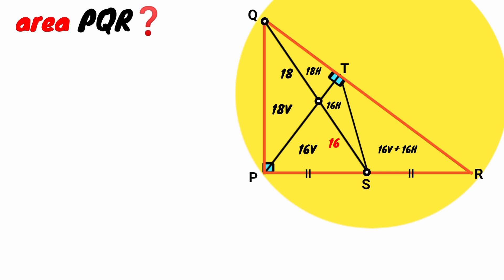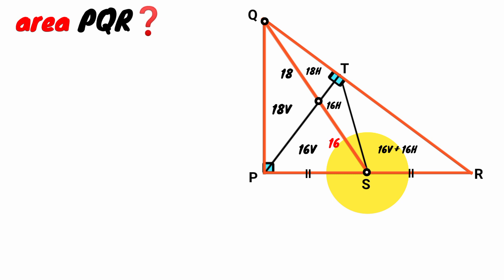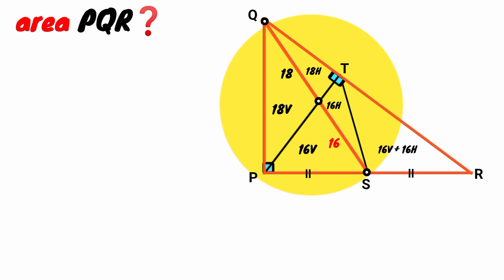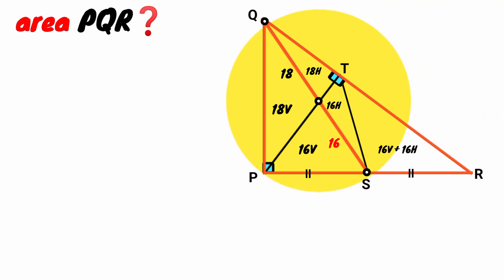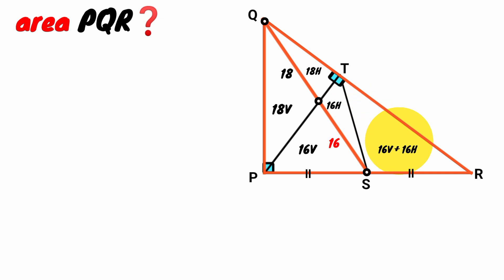Now look at triangle PQR. The line QS bisects this side — that is, it is a median of the triangle as well. Therefore, triangles PQS and QSR will have equal areas. The area of triangle PQS is the sum of 18V and 16V, while that of QSR is the sum of 16H, 18V, and 16V plus 16H.